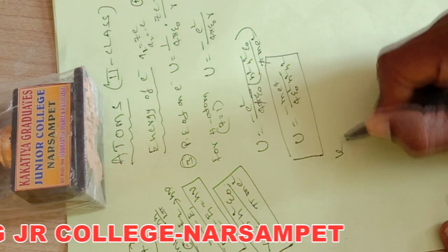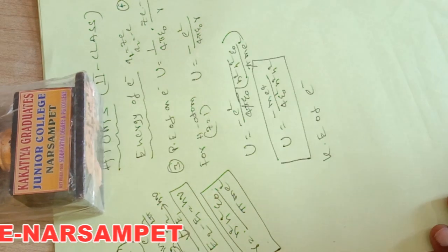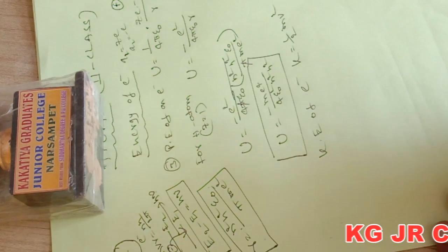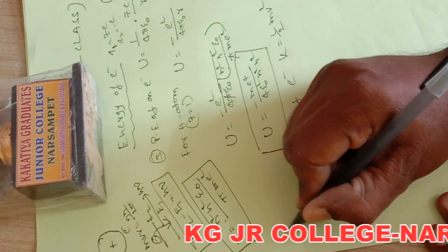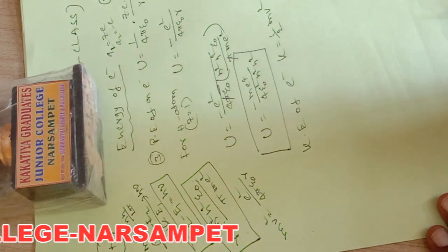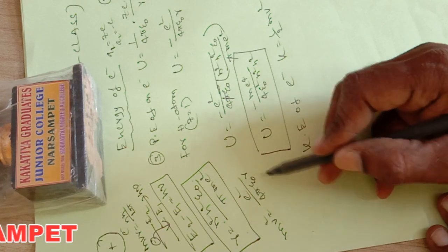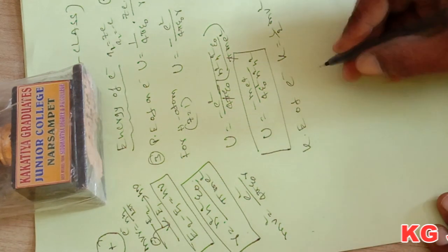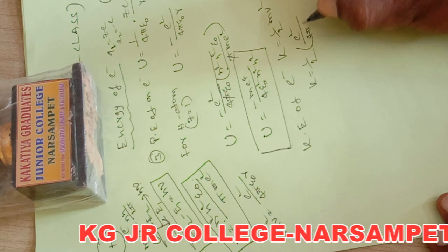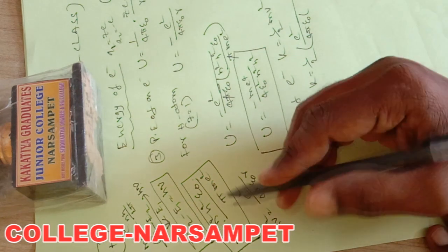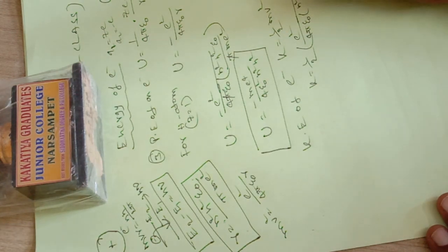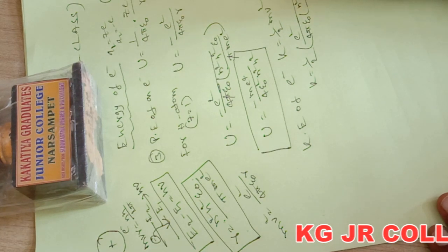Now the kinetic energy of an electron: K equals half m v². From the first postulate of Bohr, mv² equals e² by 4π ε₀ r. Substituting this value, K equals half times e² by 4π ε₀ times r value n² h² ε₀ by π m e².